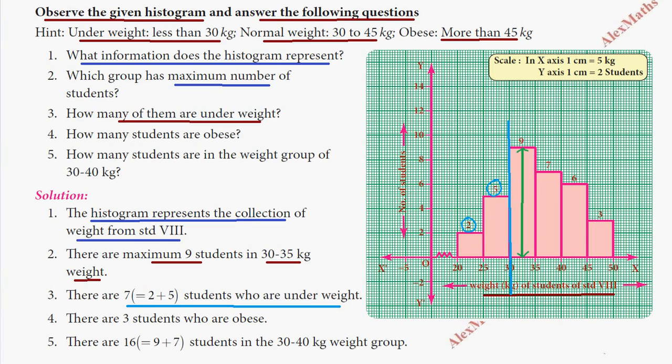Question four: How many are obese? Obese means more than 45 kg. Looking at the histogram, there are 3 students who are obese.